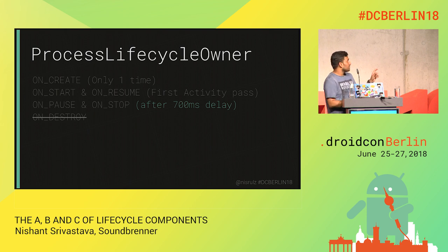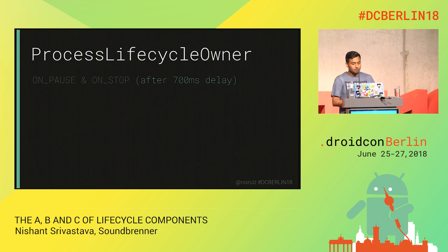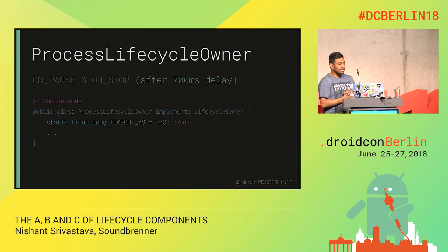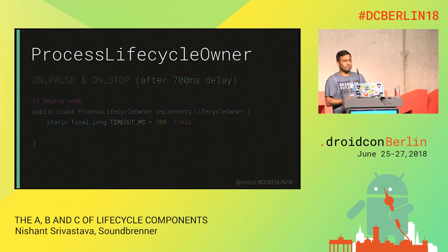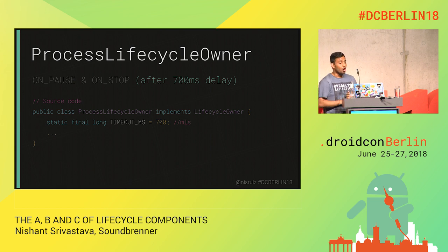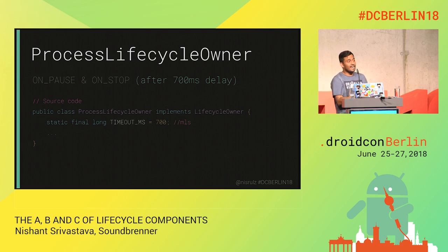Let's discuss what the 700-millisecond delay does. ProcessLifecycleOwner implements LifecycleOwner and has a final variable set at the magic number of 700 milliseconds. Some people have argued this doesn't make sense — how did they come up with this number? It's been tested multiple times by the team at Google, and they determined 700ms should be the de facto value. Although in future this might change for super heavy apps, it's final and there is no API to edit it.